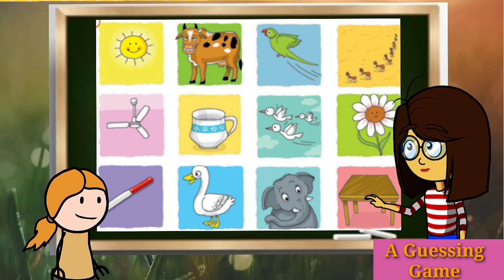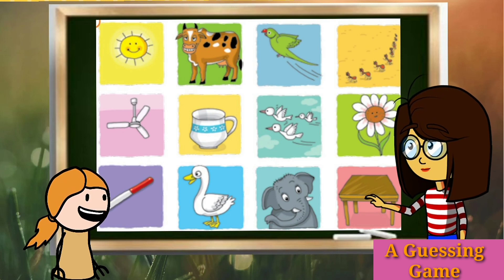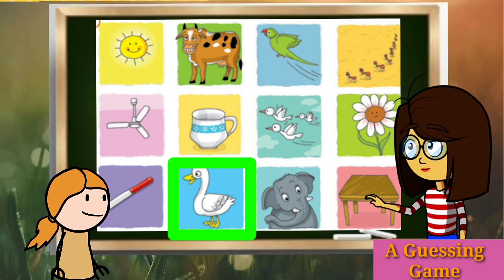It is white, it quacks. It is white, it quacks. Is it a fan? No. Cup? No. Flower? No. Birds? No. Duck quacks — it is white and it quacks. The answer is duck.